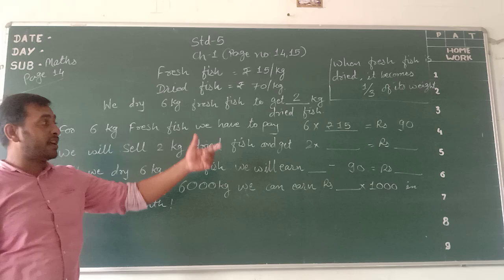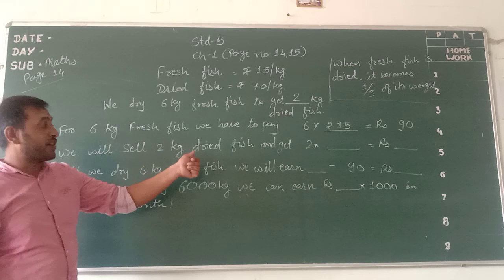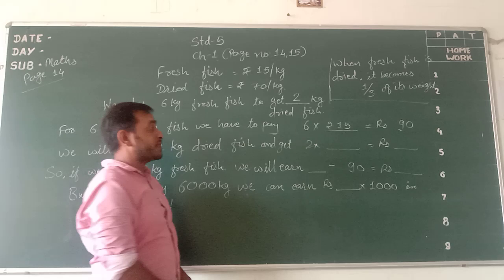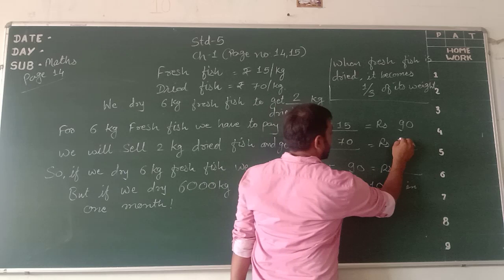We will sell 2 kg dry fish. So from 6 kg fresh fish we get 2 kg dry fish. When we sell 2 kg dry fish, it is 2 into 70 rupees, that is 140 rupees.